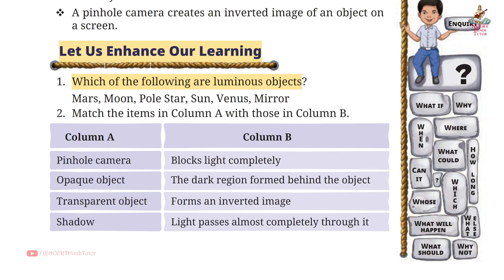Question 2: Match the items in column A with those in column B. Pinhole camera forms an inverted image. Opaque objects blocks light completely. Transparent object, light passes almost completely through it. Shadows, the dark region formed behind the object. So friends, you can match them accordingly.